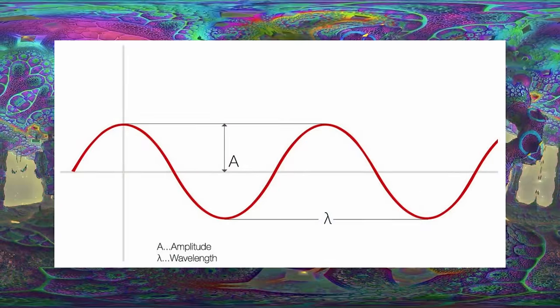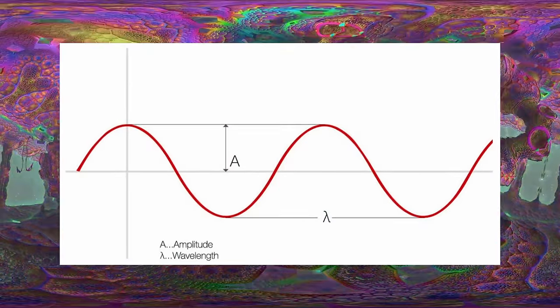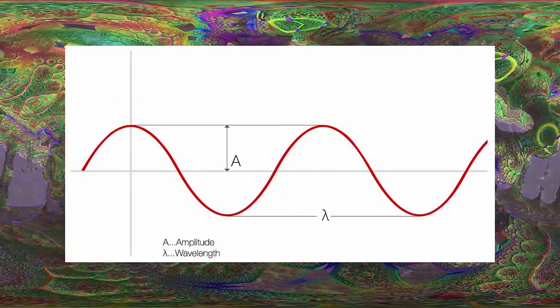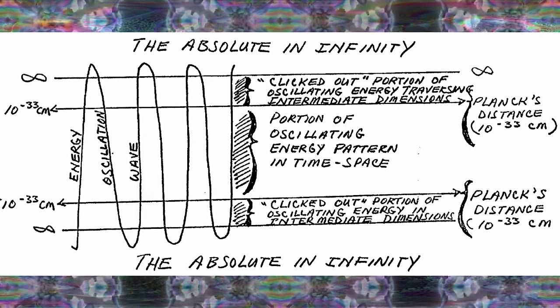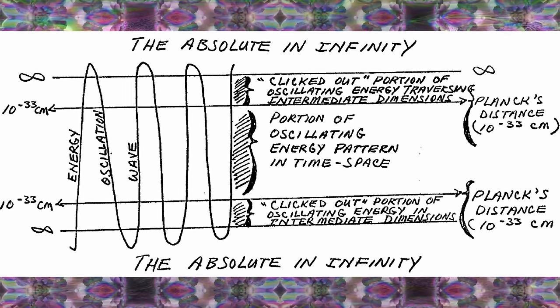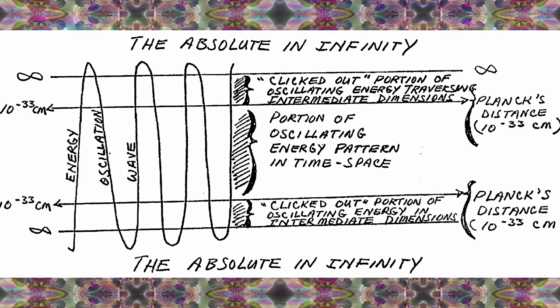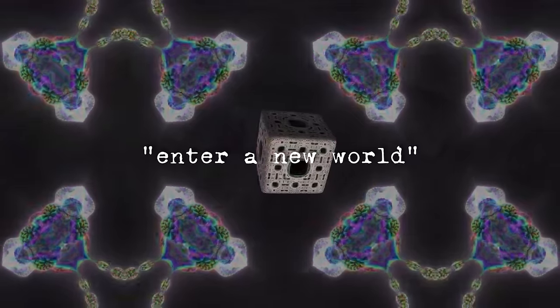When you look at a wave, like our brainwaves, it has two points of rest where it changes directions. These are necessary because without these two limits, a periodical waveform wouldn't be possible. Just before reaching that point of infinity where it changes directions, the waveform has to cross the barrier of Planck distance, roughly 10 to the negative 33 centimeters. Beyond that, our concept of time and space breaks down. In Bentov's word we enter a new world.